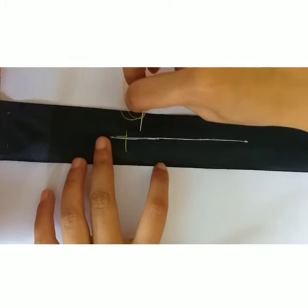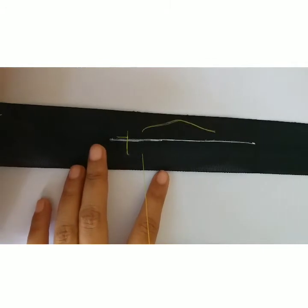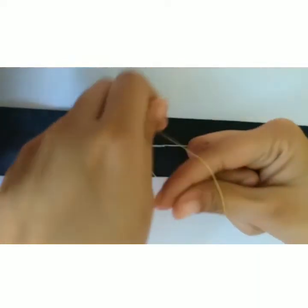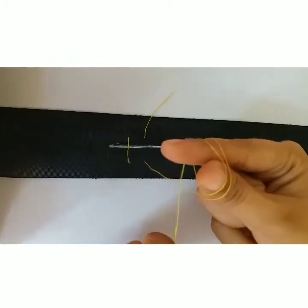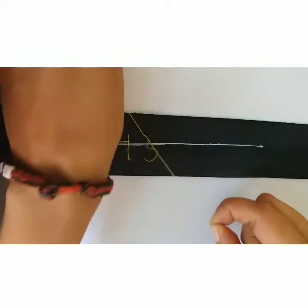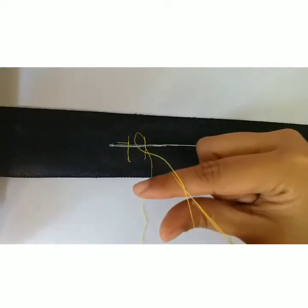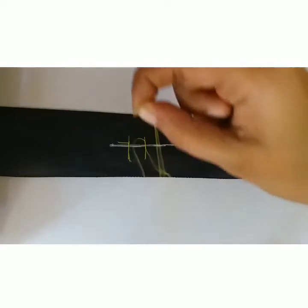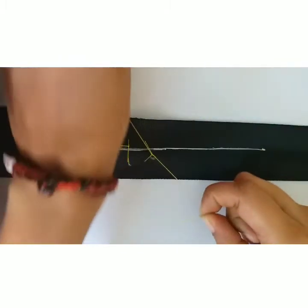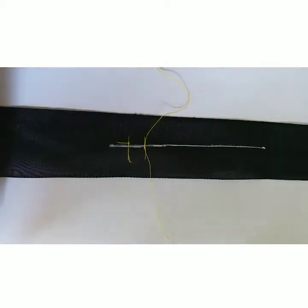Now, the other method is hand-tie method. The same method, we will hold the forceps with fingers and pass the thread through. Then I will wrap the thread around the fingers and bring my right hand towards me. Then I will take another throw and take my right hand away from me. This completes the surgeon knot, and now two additional throws, then cutting the excess material.